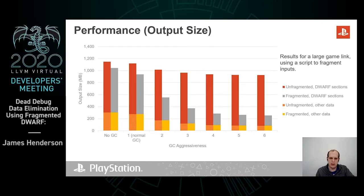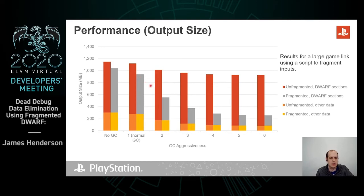So what's the output size like? Here we have an example large game package which we've fragmented using a Python script and compared it to a regular version of that same package. Even when there's no GCing, we see a 10% improvement in DWARF size, because DWARF that was previously dead can now be thrown away. And a similar trend continues as we do more and more GCing — for example, at the most aggressive GC level, we see about an 80% improvement in size.